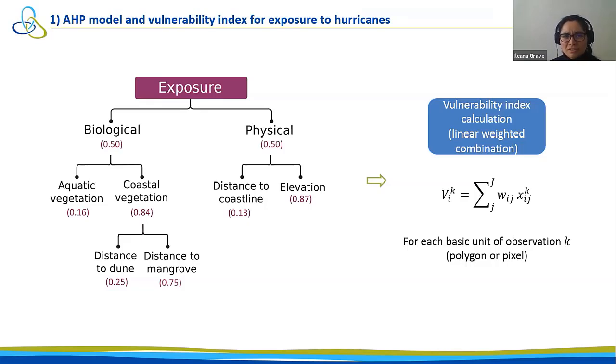In the first step of our methodology, we obtained the vulnerability index through the linear weighted combination of the weights and the standardized scores of all the attributes for each unit of observation. In this case, they were pixels. The standardized score was obtained through a value function that changes the natural scale of each attribute to a linguistic scale. It's important to emphasize that the desired state here was 0, the utopian state of absence of vulnerability.